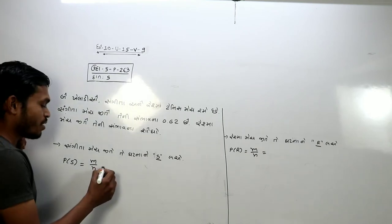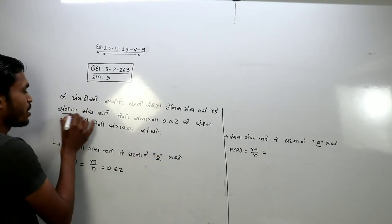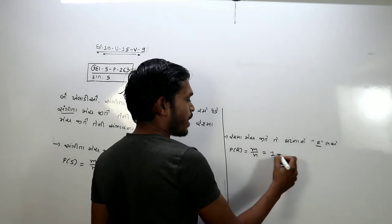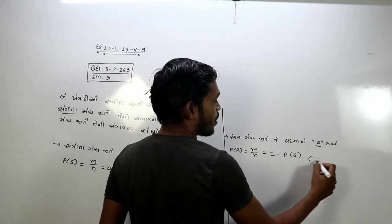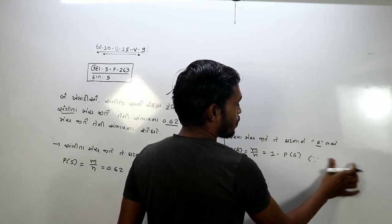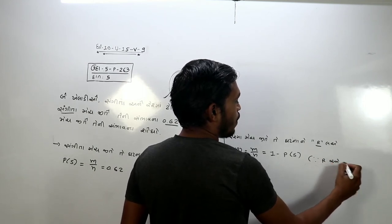So, I will get this direct sambhavna to 0.62. I need sambhavna to get here. So, this is one minus J sambhavna to get this sambhavna. I know it is one minus J. It is the same as R and S.